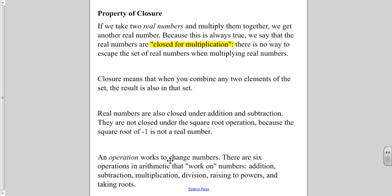There is no way to escape the set of real numbers when multiplying real numbers. This is an example of the property of closure. It is not something we can write out with a number sentence like we can the other properties. Closure also means that when you combine any two elements of a set, the result is also in that set.